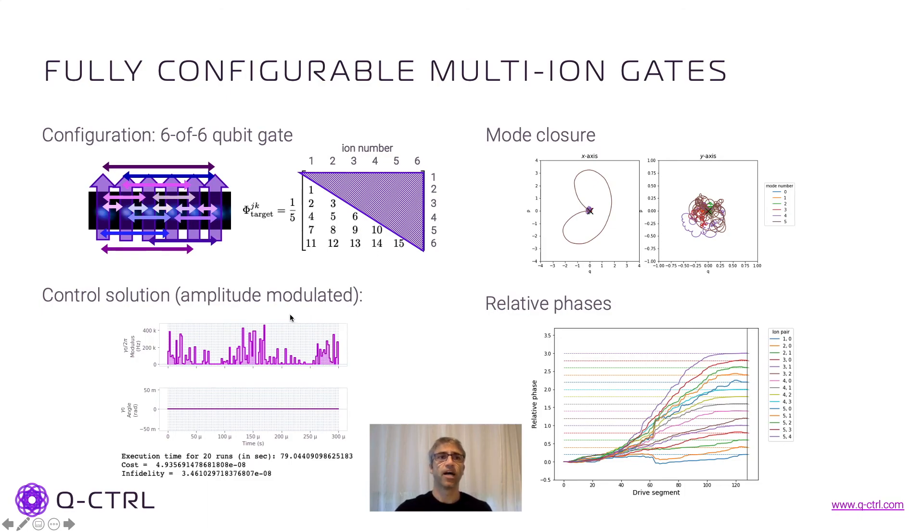In this case, I'm finding an amplitude modulation solution. And what we are showing here is that again, all trajectories closing and the relative phase coming to the different values that we set in the beginning of the problem at the end of the gate.